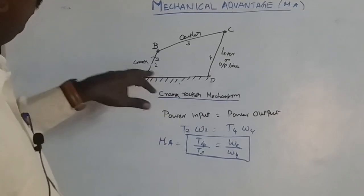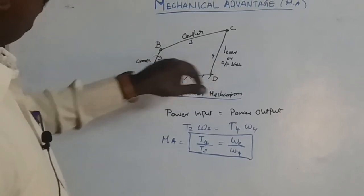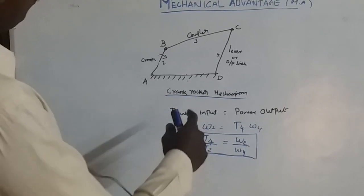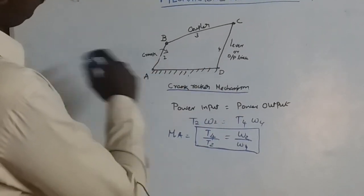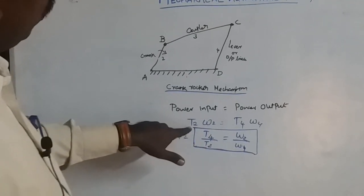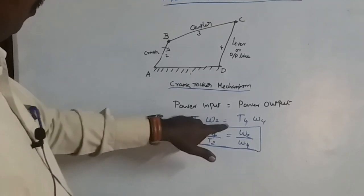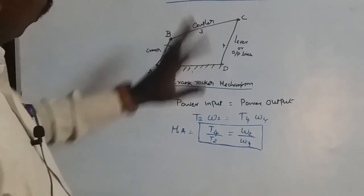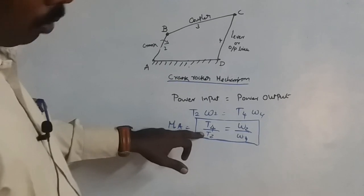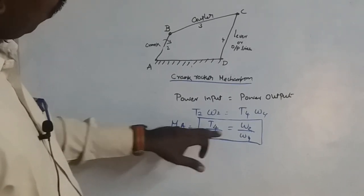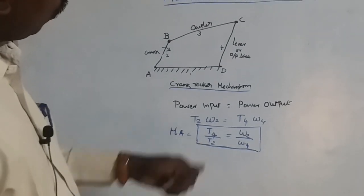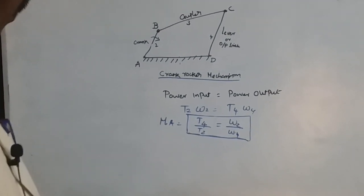Frame is number 1, crank number 2, coupler number 3, lever number 4. The mechanical advantage is the ratio of output torque to input torque. The power input equals power output: T2 times omega 2 equals T4 times omega 4. Therefore, mechanical advantage equals omega 2 divided by omega 4 — the reciprocal of the velocity ratio.